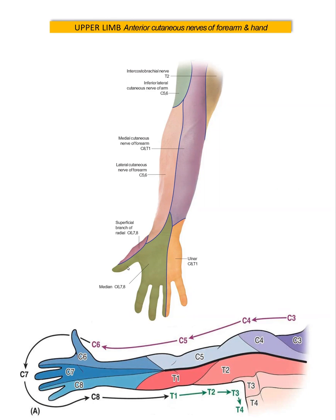Here is the important dermatomal picture. Above the clavicle is C3, and below the clavicle at shoulder level is C4, then C5, C6 including the thumb, C7 including the middle finger, C8 including the little finger and part of the medial aspect of the forearm and arm, T2 is the intercostobrachial nerve of the axilla, and C3 and T4 are at the level of the nipple.